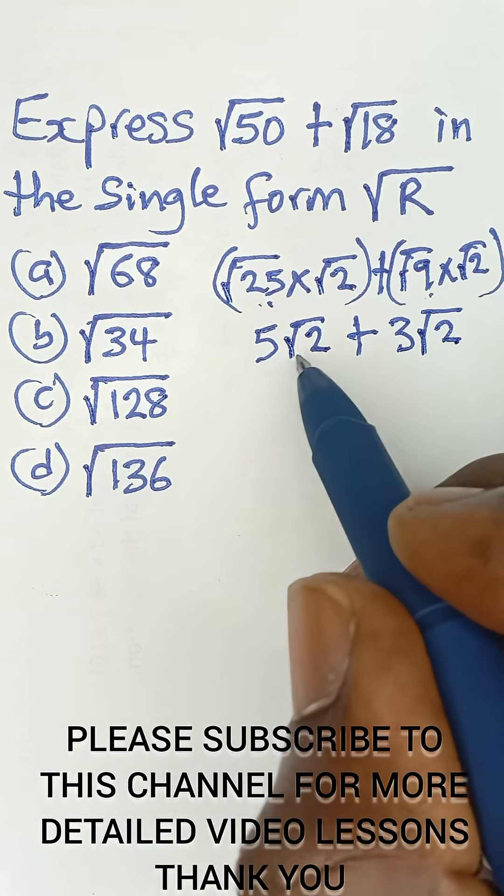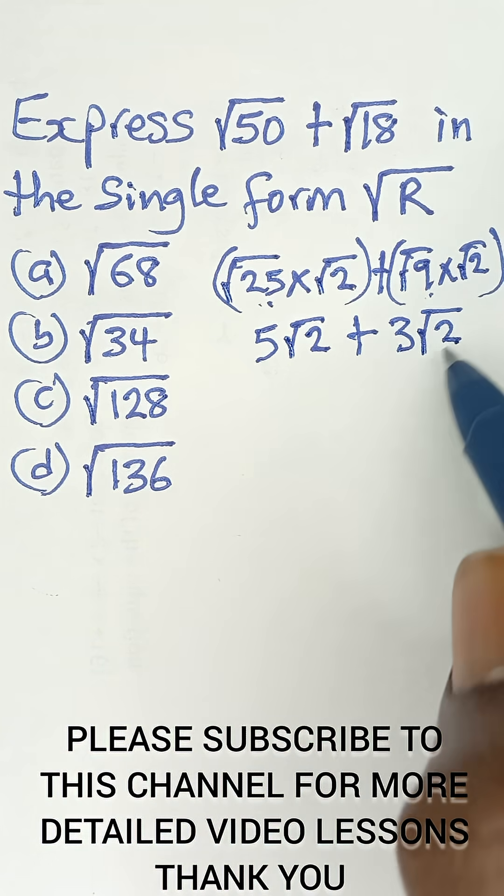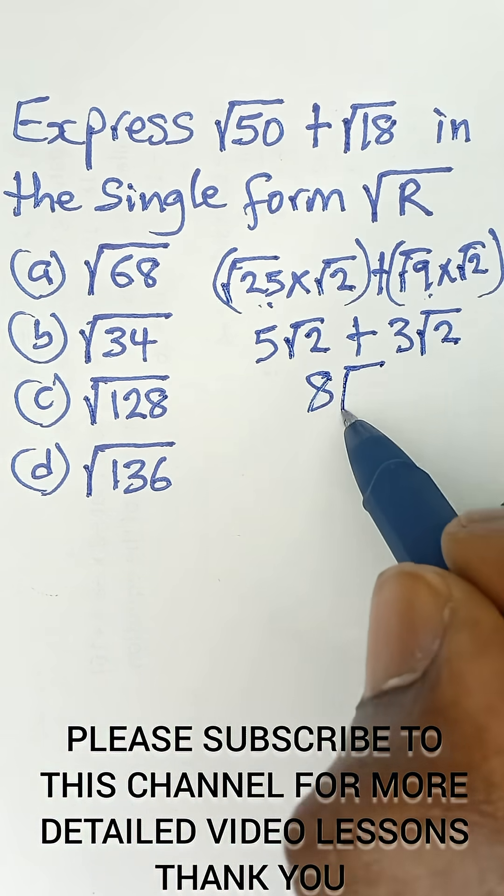So they are now like terms. 5 root 2 added to 3 root 2 will simply give us 8 root 2.